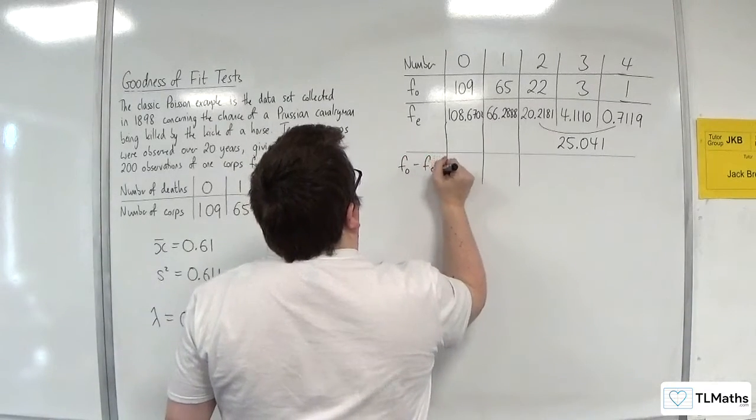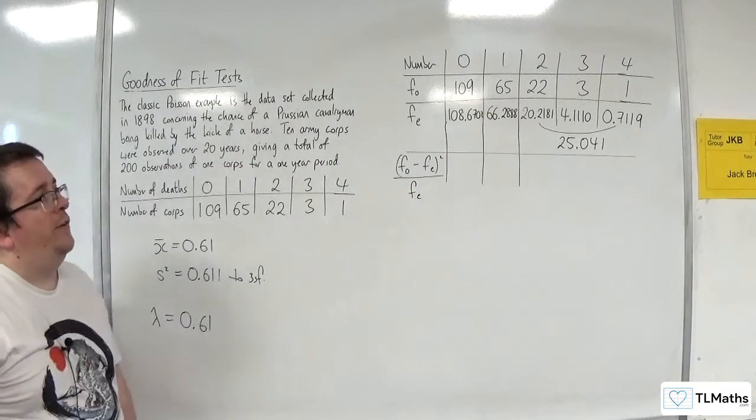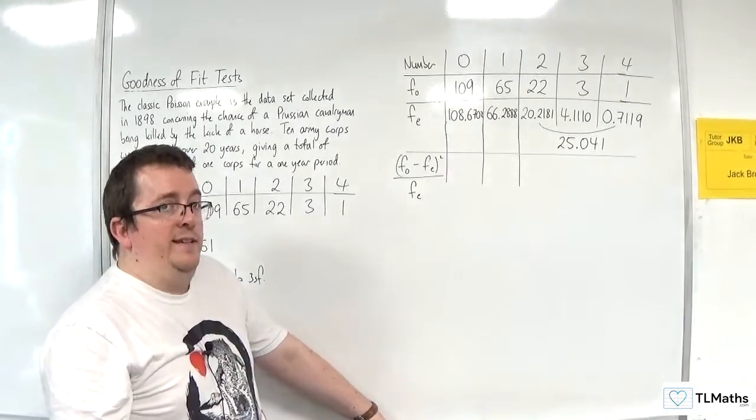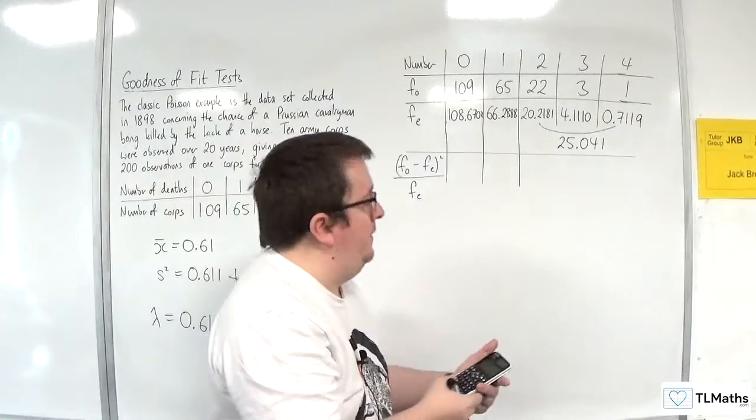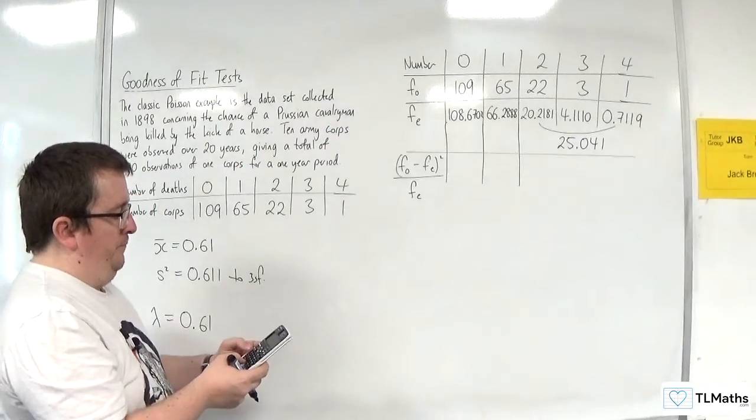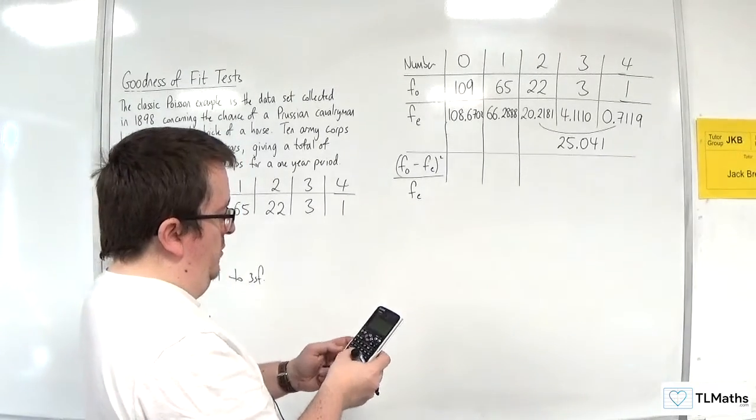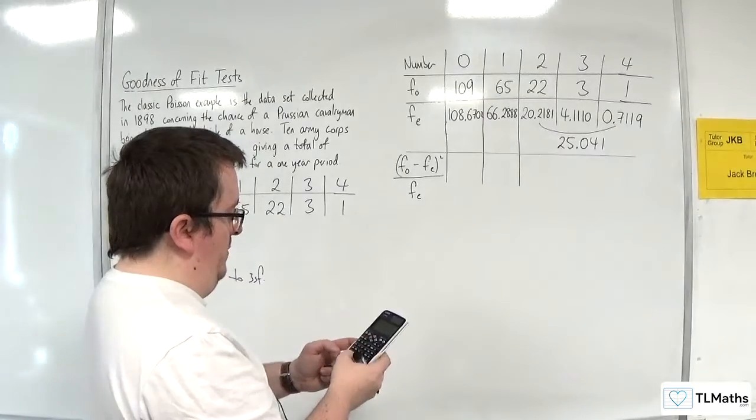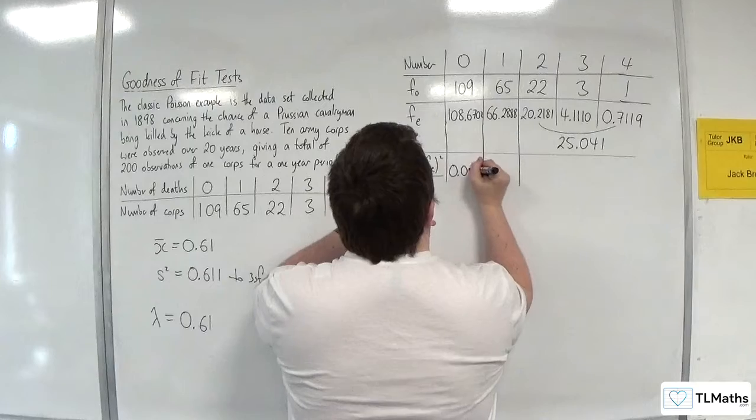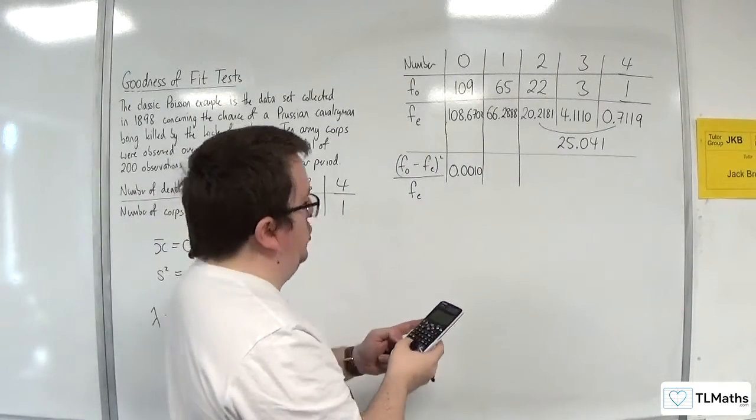So F0 minus Fe squared over Fe. Looking at those expected values, they're so close to the observed values that you'd probably think there's no point doing a test. The Poisson model clearly fits it very well. But we'll work it through. So you've got 109 take away 108.6702 squared divided by 108.6702. So that's 0.0010. Very small contribution there.